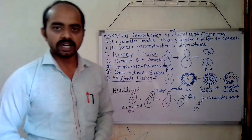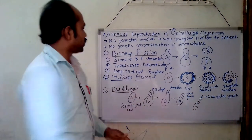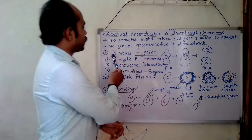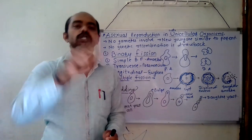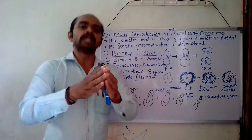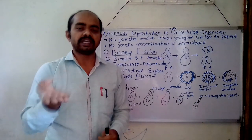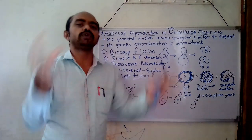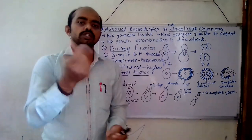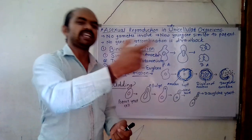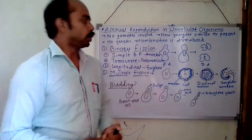Let's see the types of asexual reproduction in unicellular organisms. First of all, we will talk about binary fission. 'Bio' means two. Fission means to break — it is the opposite of fusion. Fusion means to attach, and fission means to break. So binary fission means to divide into two parts.